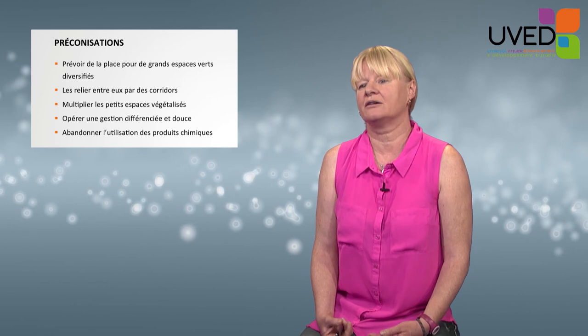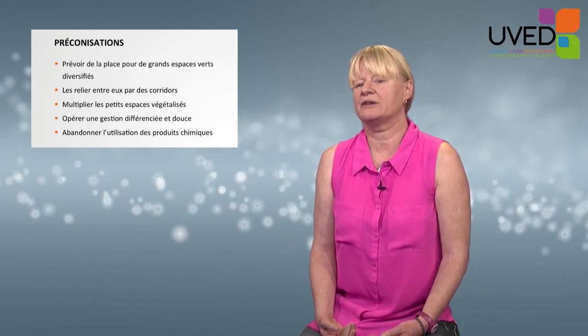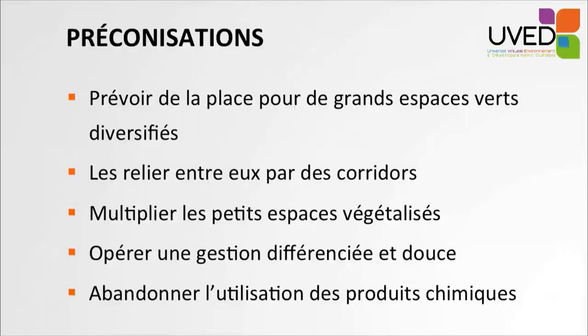Recommendations: In order to improve biodiversity quality in towns, space should be made available for large green spaces, well diversified but connected between them by corridors such as tree-lined covered corridors, tree rows, or hedges. Small green spaces must be multiplied throughout the town. These spaces must be managed in a very soft way, and pesticides and chemicals must be totally ruled out. This will soon be the case, as the use of pesticides and phytosanitary products in public spaces will be banned within a couple of years — already the case in some towns in France — in order to improve town dwellers' well-being and biodiversity.